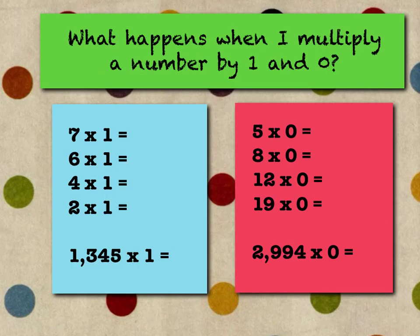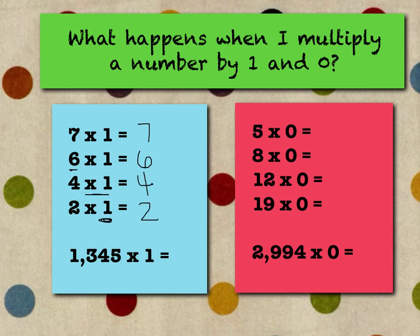So let's review. What happens when I multiply a number by one and zero? The identity property says that any number multiplied by one equals that number — so seven times one equals seven, six times one is six, because any number times one is itself. It's like a mirror: one shows that number itself. Four looks in the mirror of the one, so it is four. Two times one is two. And it doesn't matter how big: one thousand three hundred forty-five times one equals one thousand three hundred forty-five. It looked in the mirror of the one and saw itself.